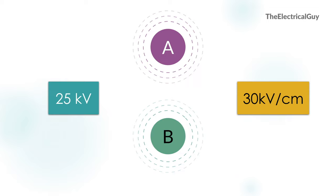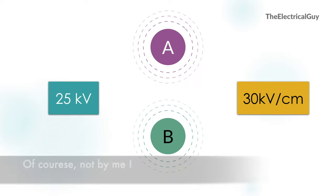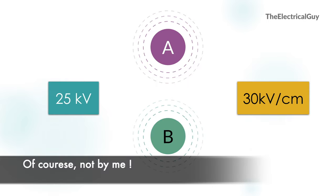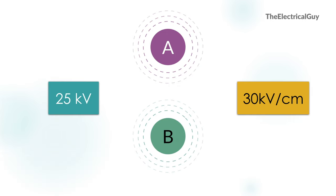This current is almost negligible if the electric field intensity is less than 30kV per centimeter. This 30kV per centimeter value is based on studies and calculations — it depends upon many other factors which we will see in this video. If the electric field intensity is less than 30kV per centimeter, the current flowing between the two electrodes is negligible and you can ignore it.